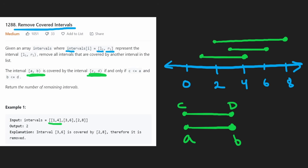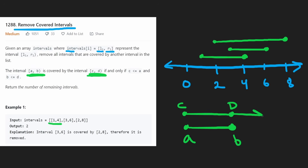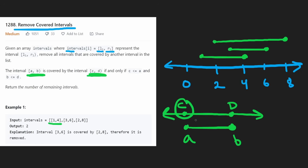Basically, for this interval to be covering the other one, the points have to be equal or this interval has to be even bigger — both points have to be equal to or covering more than the inner interval.